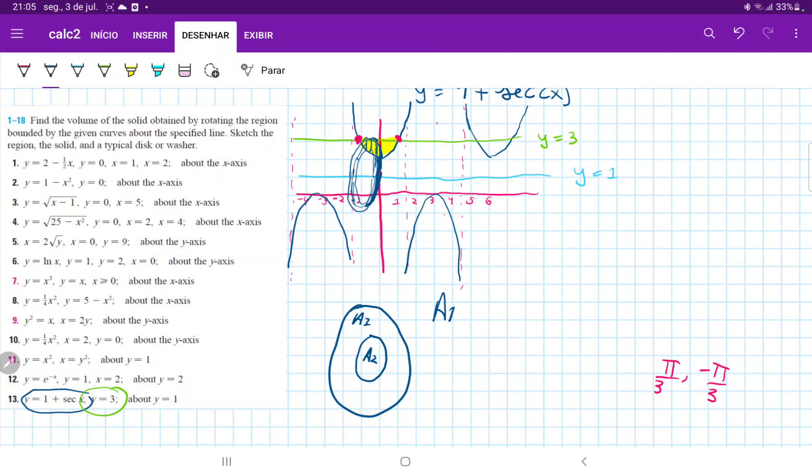So for this one, A1 is pi times r squared. And the radius is just 3, the distance from this function y is equal to 3, to the distance y is equal to 1. So 3 minus 1 squared, that's A1.